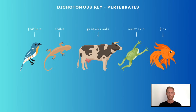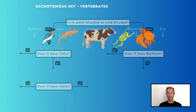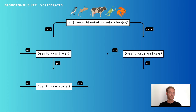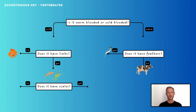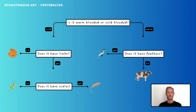First, you need to study the groups to work out what they have in common and what makes them different from others. The first question should be based on a feature that will split the group into two. For example, is it warm-blooded or cold-blooded? For each of the two subgroups formed, a further question based on the features of that subgroup should then be asked. For example, does it have limbs? Since fish have now been singled out, no further questions need to be asked. We should continue the process until each group has been separated from the others, giving us the basis for our dichotomous key.